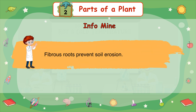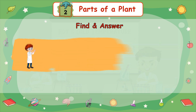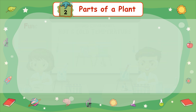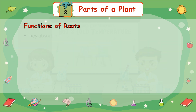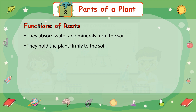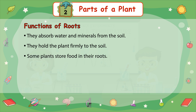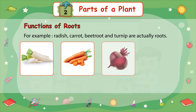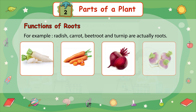Fibrous roots prevent soil erosion. What are root hairs? Functions of roots: they absorb water and minerals from the soil, they hold the plant firmly to the soil, and some plants store food in their roots. For example, radish, carrot, beetroot, and turnip are actually roots.